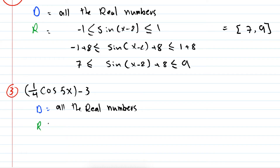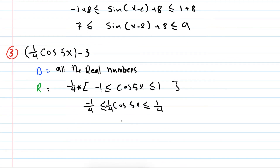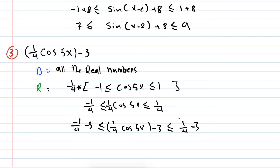For the range, I put cosine(5x) between -1 and 1, then multiply everything by 1/4: -1/4 ≤ (1/4)cosine(5x) ≤ 1/4. Then I subtract 3 from everything: -1/4 - 3 ≤ (1/4)cosine(5x) - 3 ≤ 1/4 - 3. That is the range of this function — between -1/4 - 3 and 1/4 - 3.